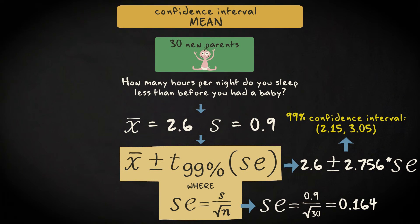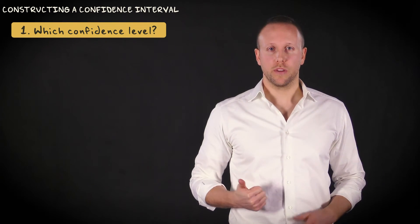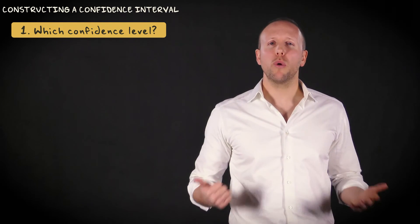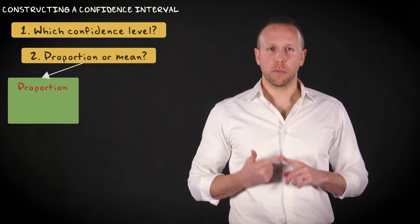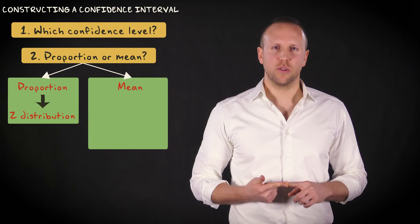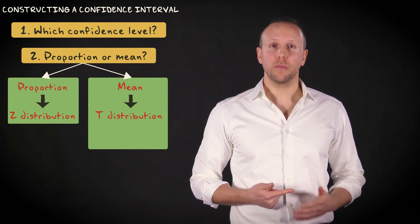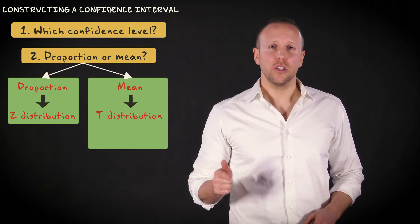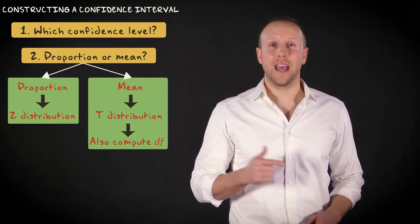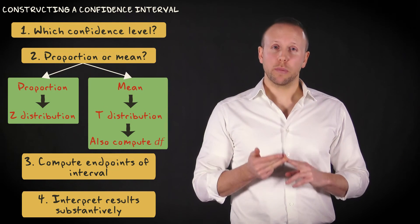You can also easily do that for other confidence levels. Let me conclude this video by giving you a step-by-step plan for constructing a confidence interval. First, decide which confidence level you want to use — for instance, do you settle for the regular 95% level or do you want to be more confident and less precise, or more precise and less confident? Second, decide if you're dealing with a proportion or a mean. If you're interested in a proportion, you work with the Z-distribution; if you're interested in a mean, you use the T-distribution. Look up the relevant Z-score or T-score accordingly. Don't forget that for a mean, you should also compute the degrees of freedom, which is equal to n minus 1. Third, compute the endpoints of the confidence interval. Finally, fourth, interpret the results substantively.